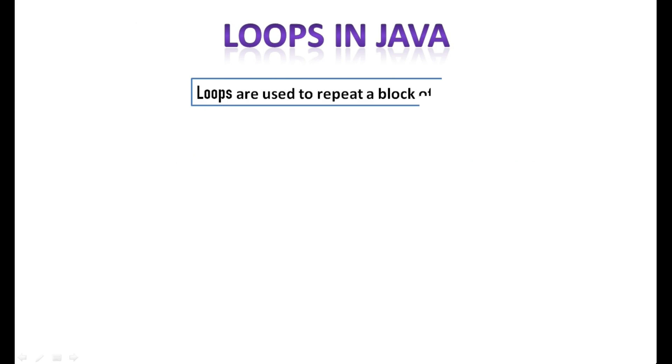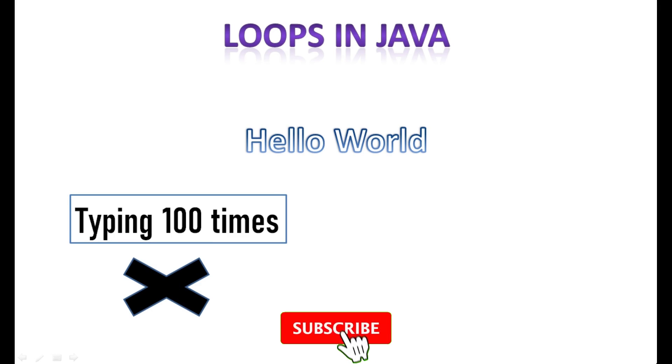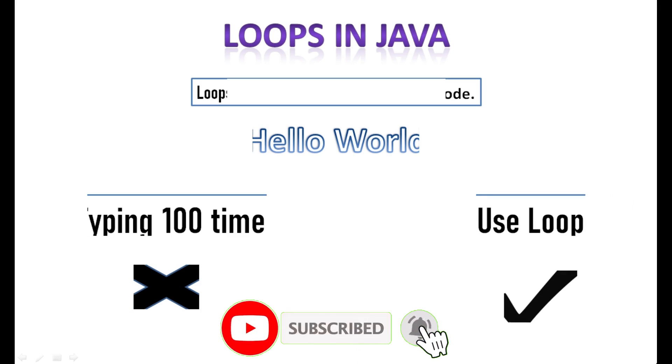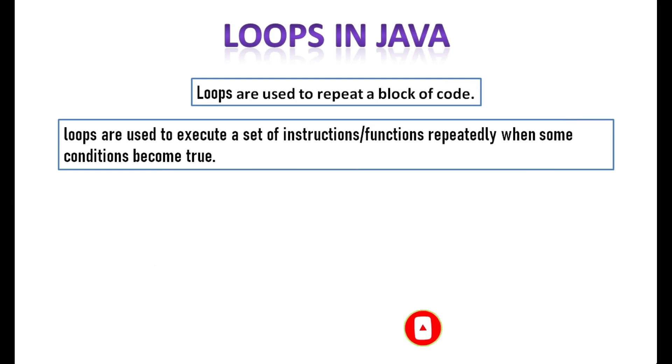In computer programming, loops are used to repeat a block of code. For example, if you want to show a message hello world 100 times, then rather than typing the same code 100 times, you can use a loop. In programming languages, loops are used to execute a set of instructions or functions repeatedly when some conditions become true.